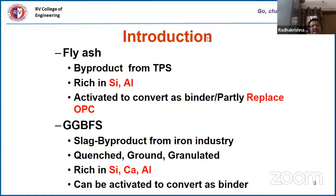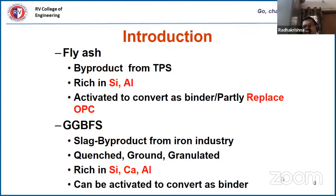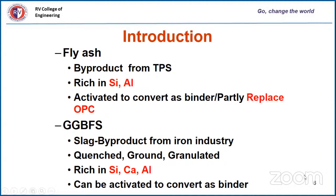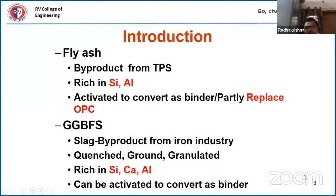Fly ash is a byproduct of thermal power stations, rich in silica and alumina. It can be activated to convert into a binder and used as a partial or full replacement of OPC. Another material is Ground Granulated Blast Furnace Slag (GGBFS) — a byproduct of the iron industry that is ground after quenching. GGBFS is rich in silica, calcium, and alumina — the additional calcium differentiating it from fly ash — and can be activated to make it a binder.